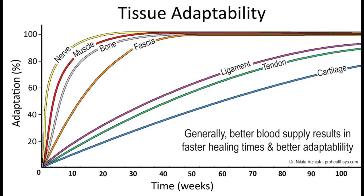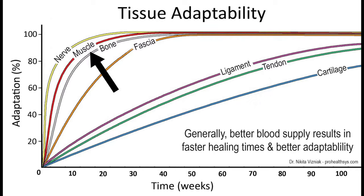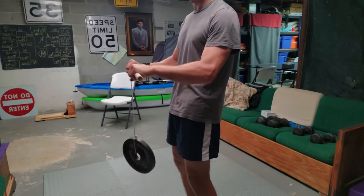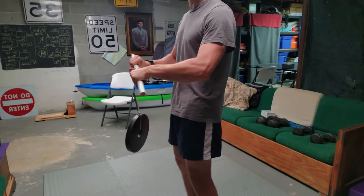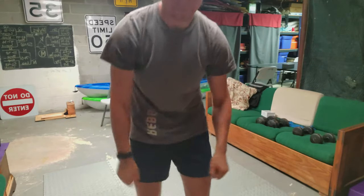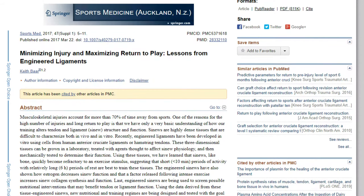Where tendons differ significantly from muscle is in their tissue adaptability. There is a significant difference between tendon and muscle tissue adaptation. Think about doing an exercise such as a wrist curl — it's easy to get a big pump and feel the muscles working, but you're not really training the tendons as quickly as that muscular response.